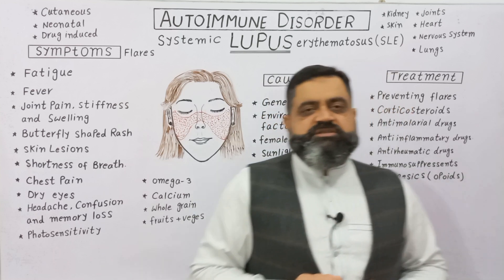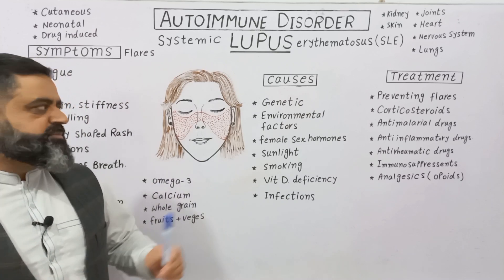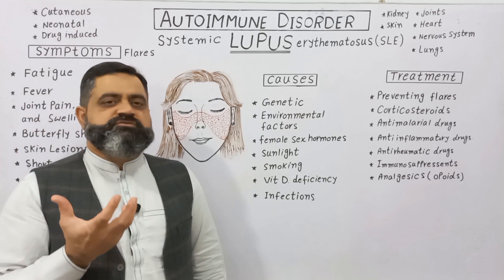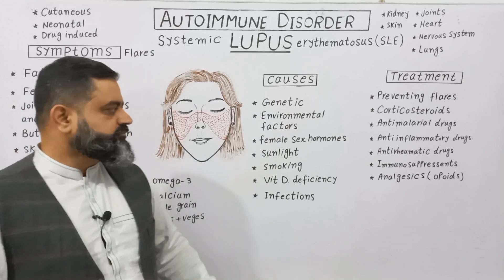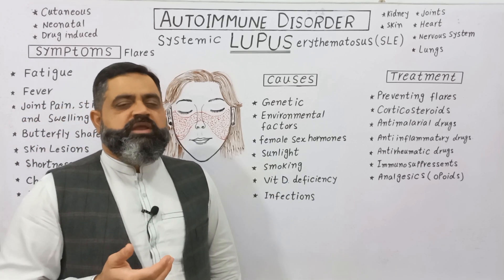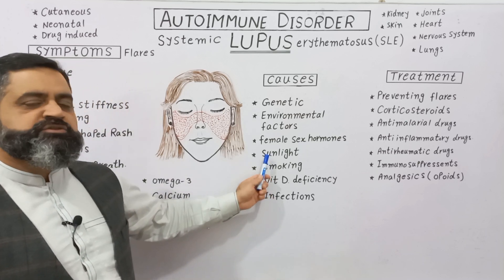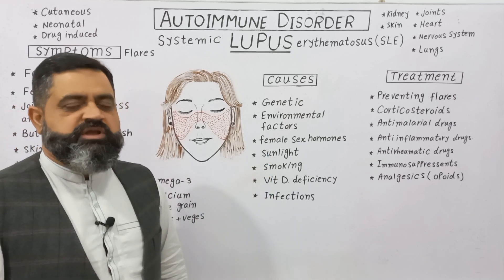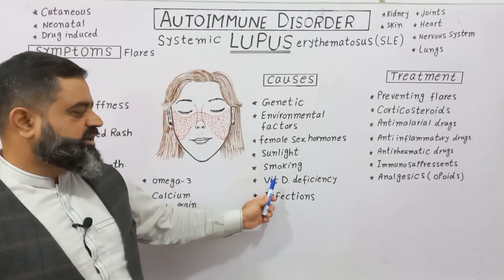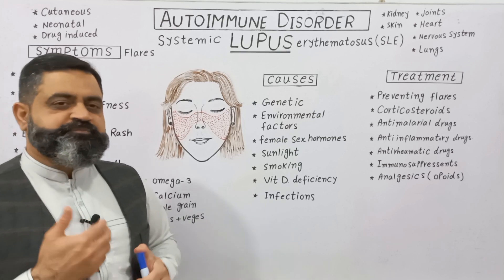We still don't know the exact cause of this disease, but genetics and environmental factors are the major causes. Female sex hormones known as estrogen can also trigger lupus. Additionally, sunlight especially ultraviolet radiation, smoking, vitamin D deficiency, and certain infections in the body can also lead to lupus.